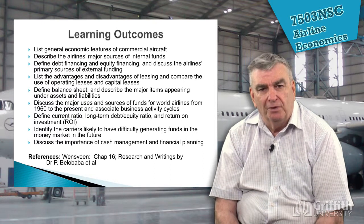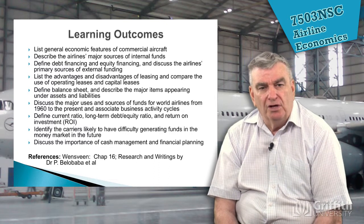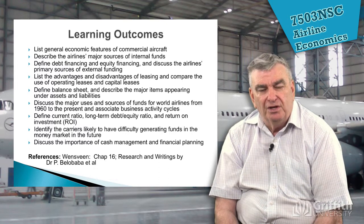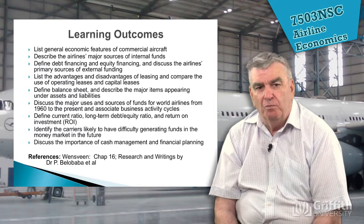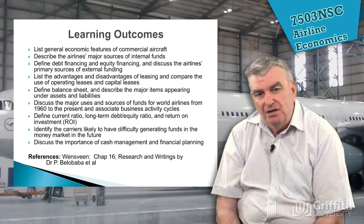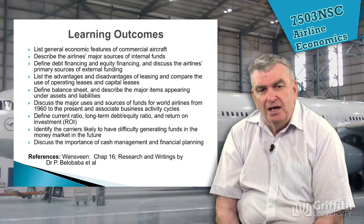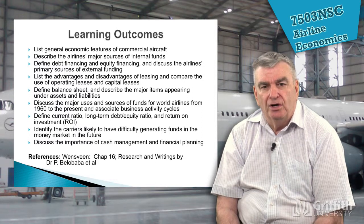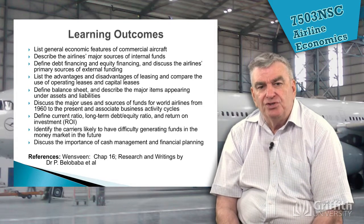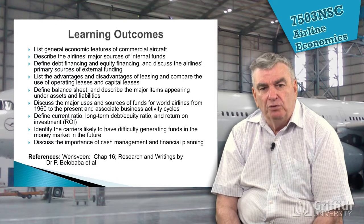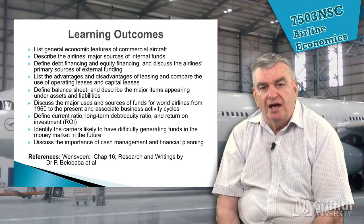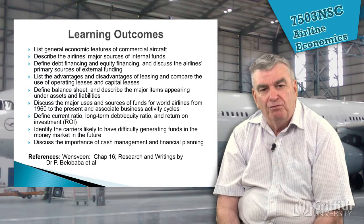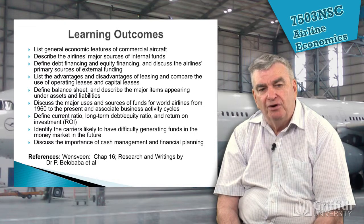We're going to be talking about the economic features of commercial aircraft, the major sources of funds that airlines can find internally and externally, the advantages and disadvantages of leasing, and comparing the use of operating and capital leases. We're going to talk about the balance sheet, describing major items under assets and liabilities, return on investment and other metrics, identifying carriers likely to have difficulty generating funds, and discussing the importance of cash management and financial planning.